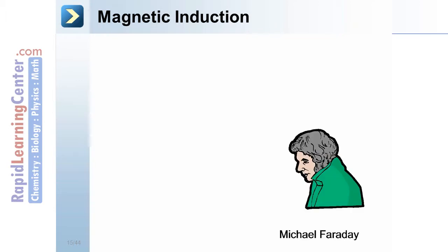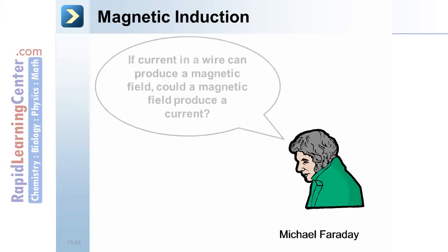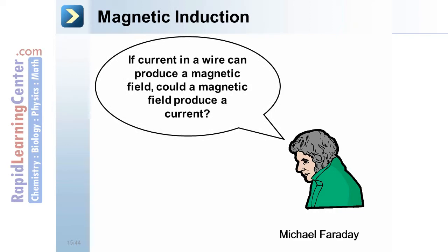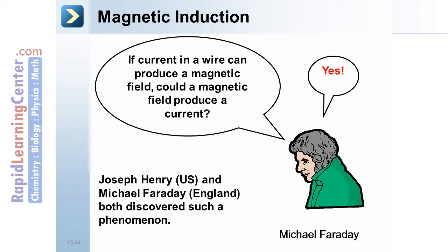Magnetic induction. Mr. Faraday wondered, if current in a wire can produce magnetic fields, could a magnetic field do the opposite — create a current? And his answer was yes. This was discovered both by Henry from the US and Faraday from England.